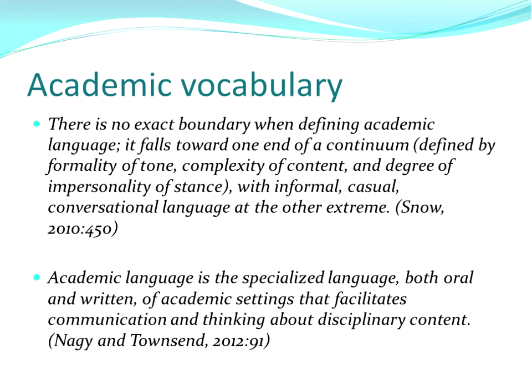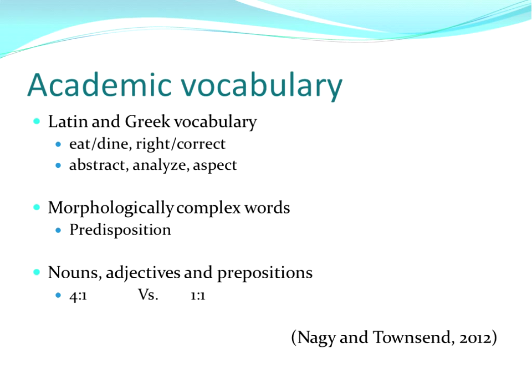Some particular features define academic vocabulary from general English. Anyone with a Latin-based language will probably look at a list like the Academic Word List and think these all have cognates in my own language. And to a certain extent that's true. If you look at non-academic vocabulary — like 'eat' and 'dine,' or 'right' and 'correct' — you often have a Germanic root word and a Latin root word in informal English. But a lot of formal vocabulary in academic writing has no Germanic equivalent, such as the word 'analyze.'